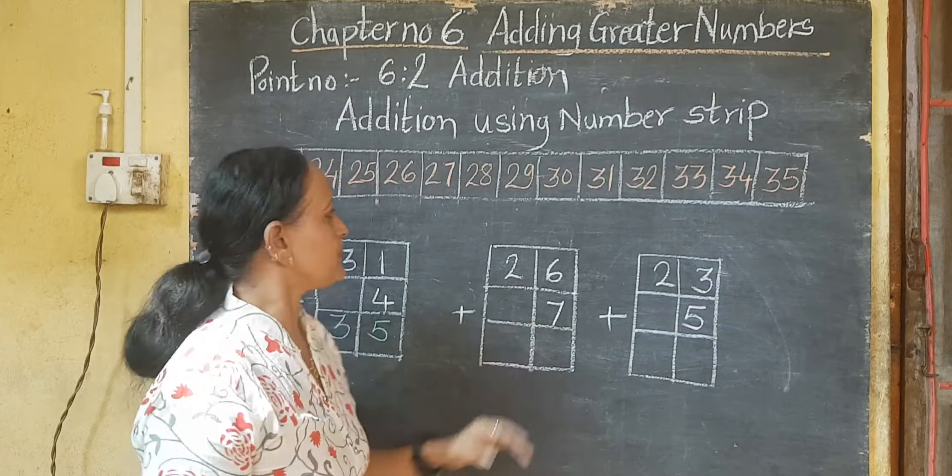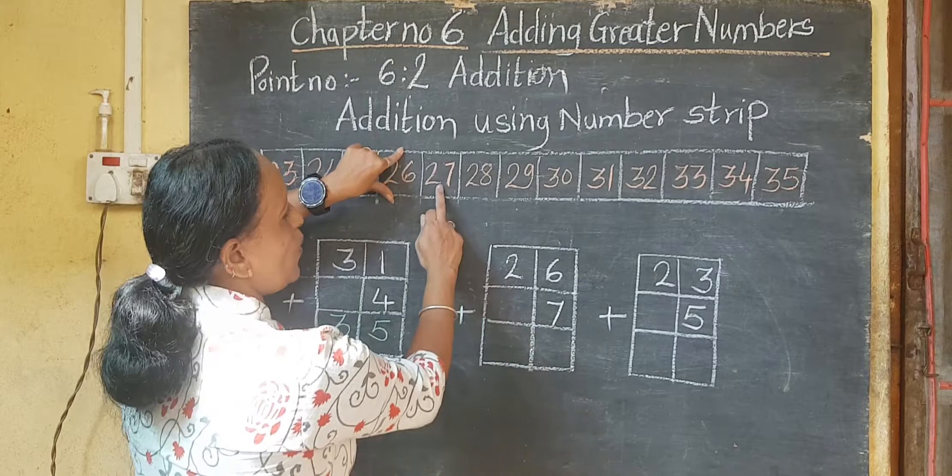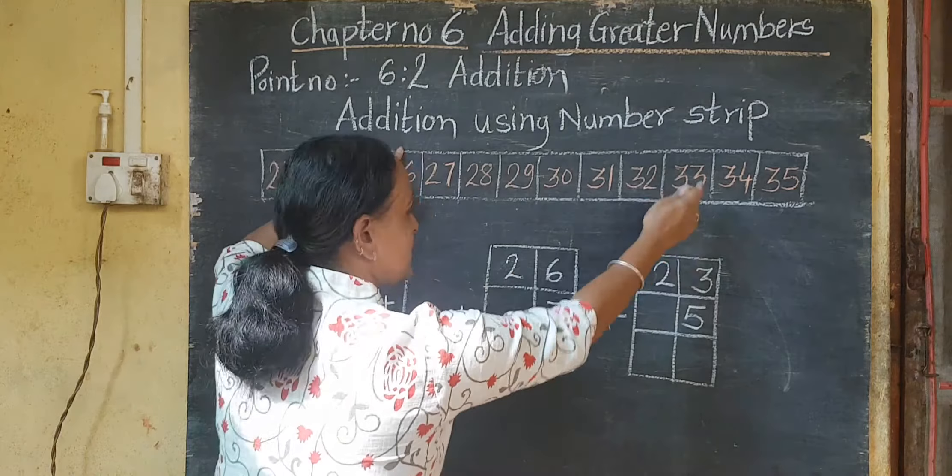Next: 26 plus 7. Can you see the number strip? On that you have to find 26. From 26 you have to go forward seven steps — one, two, three, four, five, six, seven. What is the answer? 33. Your answer is 33.